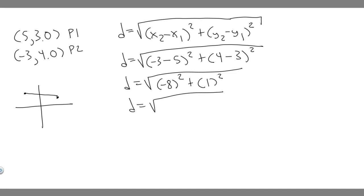D is going to equal the square root of -8 squared, which is 64, plus 1 squared, which is just 1. So 64 plus 1, that's just going to be 65.